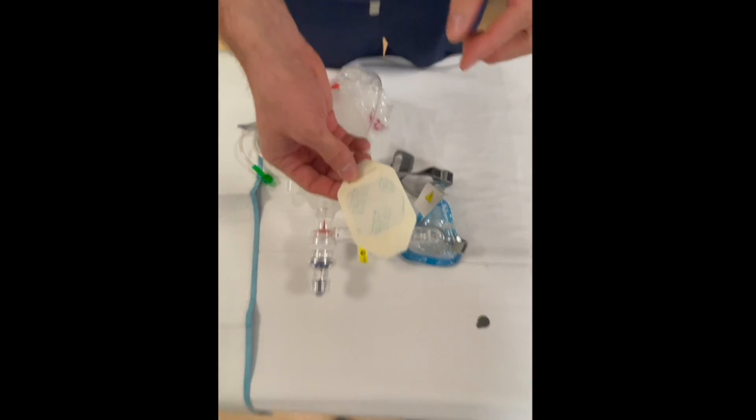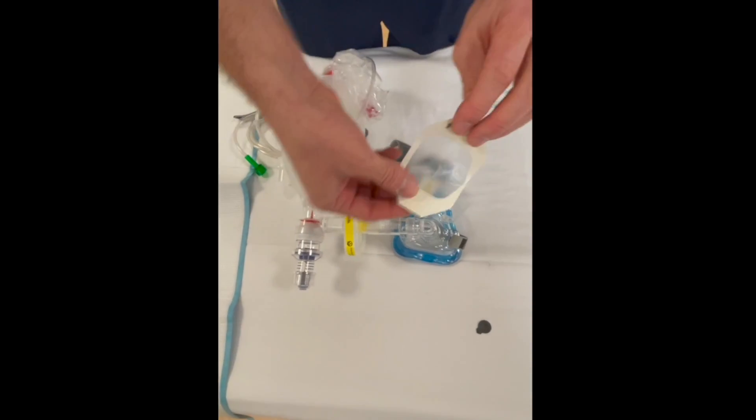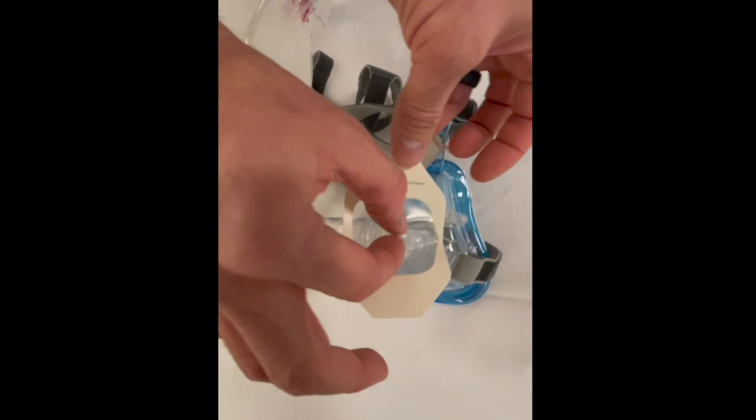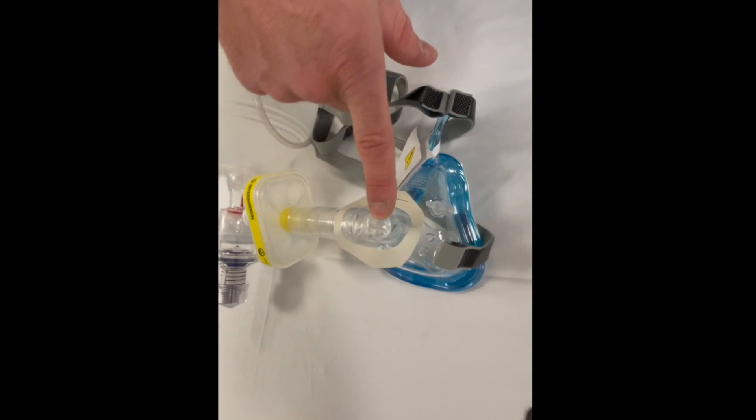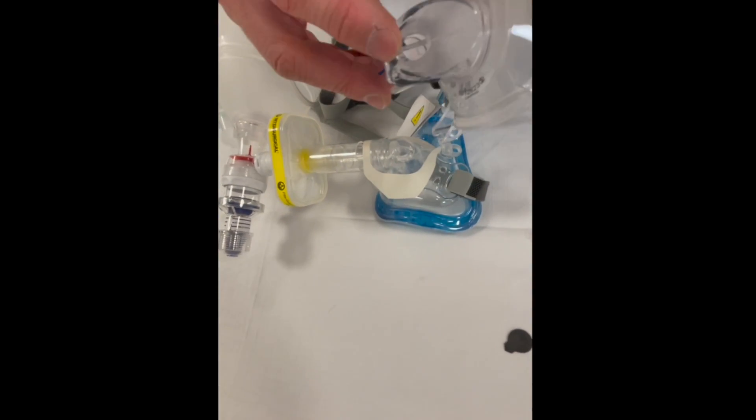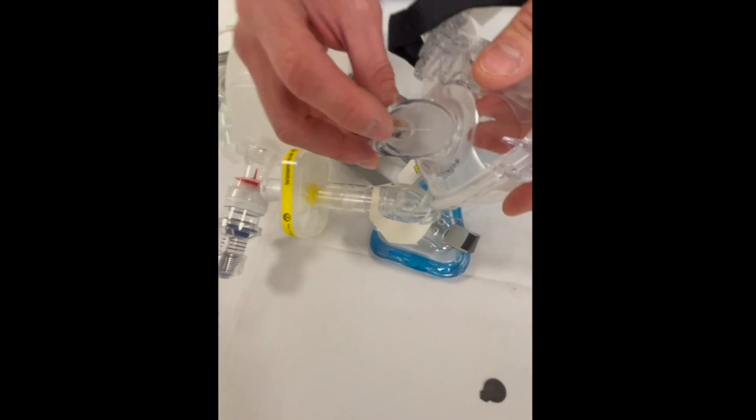We just get a tegaderm, lay it right over, and then you pinch it and wrap it around the sides to make sure that this exhaust port is covered. It's going to be the same thing on the other type of mask. You just make sure that this exhaust port is covered.